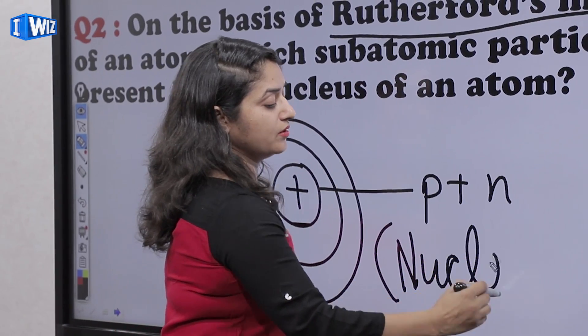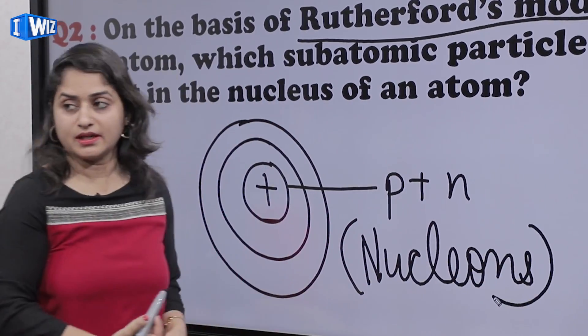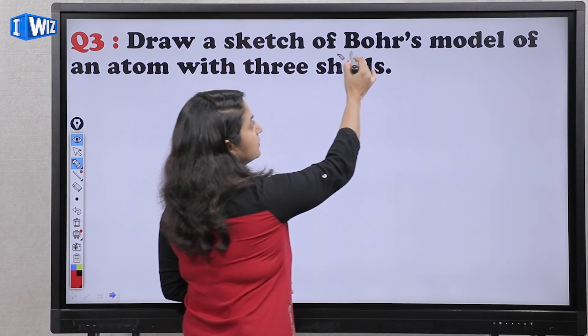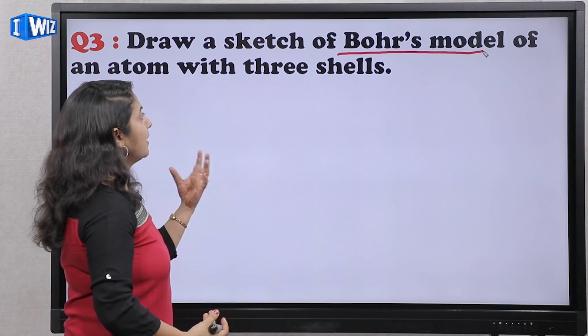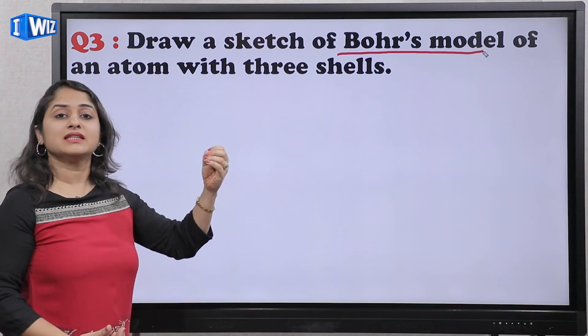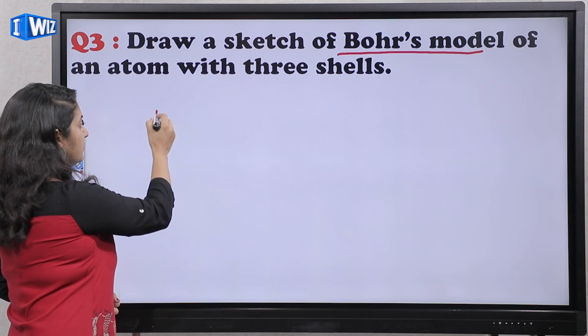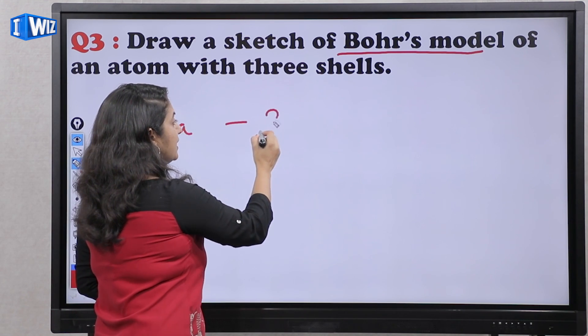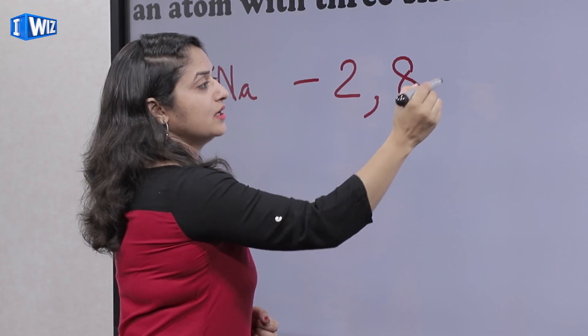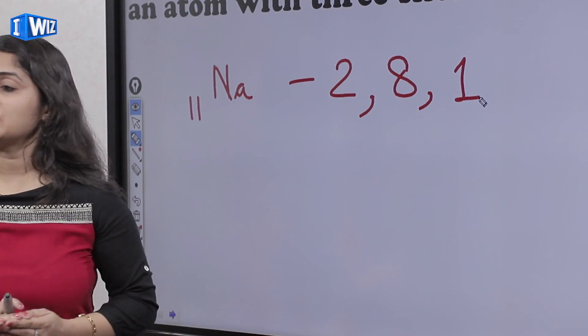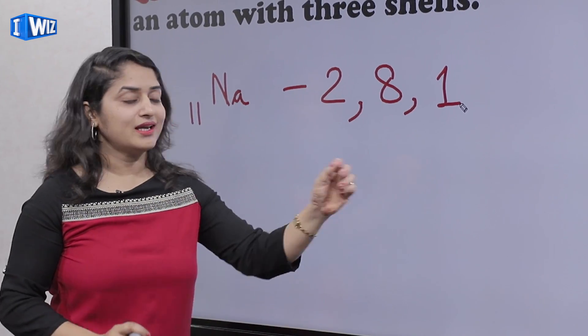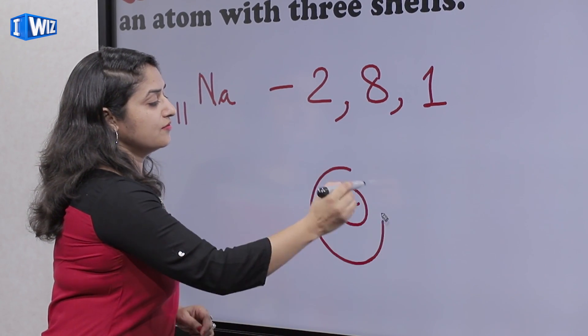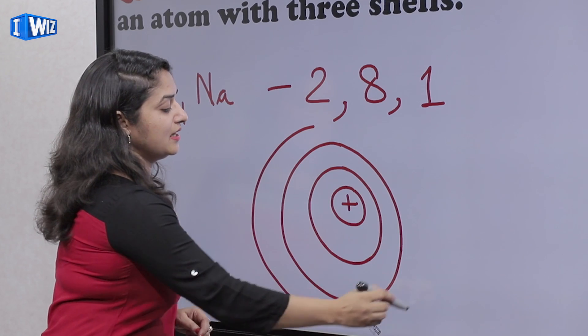Subatomic particles, nucleons. First shell mein hoonge two electrons, second shell mein hoonge eight electrons, third shell mein hooga siraf ek electron. So this is nucleus, first shell, second shell, and third shell.